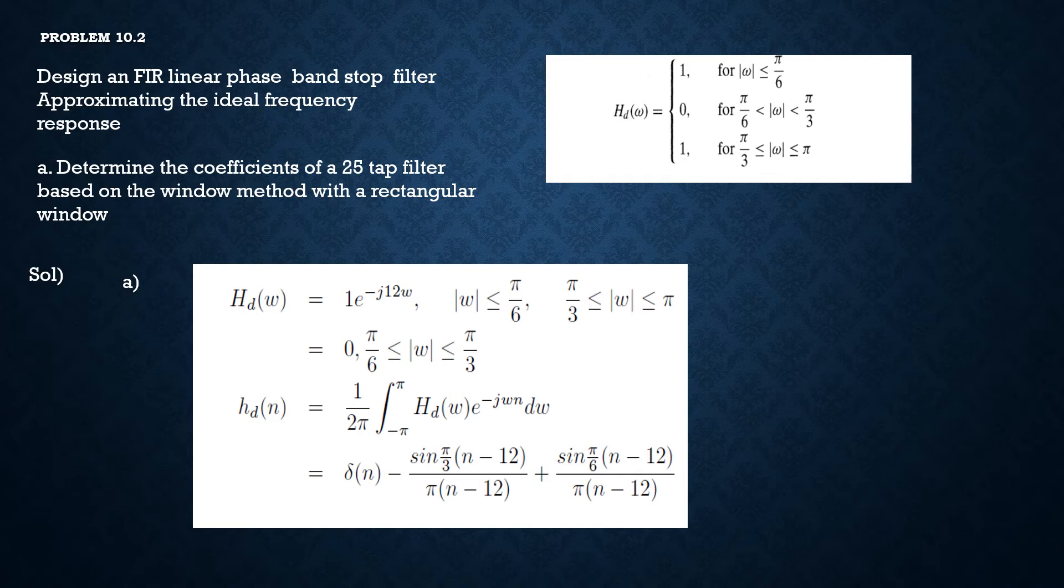And also, omega lies in between pi by 3 to pi. For 0, omega lies in between pi by 6 to pi by 3.